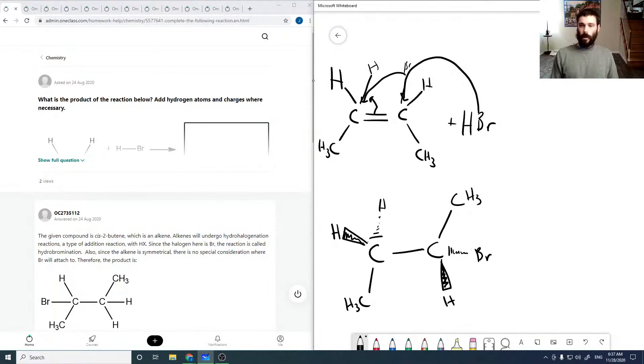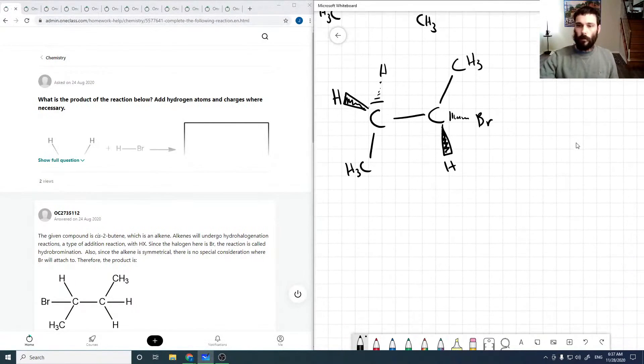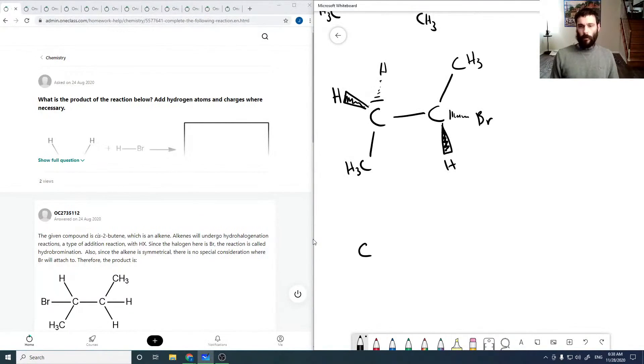Depending on whether it comes from the top or bottom will determine the ordering here. Or depending on which side of the double bond it attacks will also affect this. So it could be that, or it could be this. It could basically swap the bromine-hydrogen positioning. That really doesn't change much and wouldn't be observable, but these are...